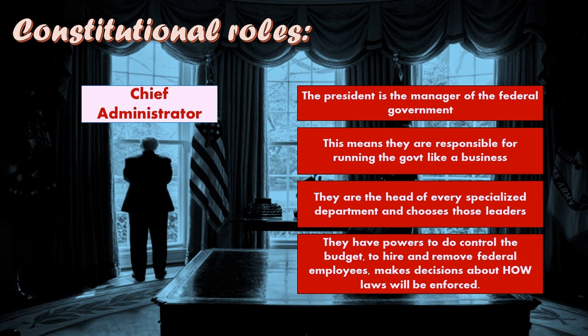The president also makes decisions about how laws will be enforced. For example, President Obama chose to prioritize enforcement of more dangerous drugs like heroin and methamphetamine and deprioritize marijuana enforcement. President Trump, as administrator, made the opposite choice and prioritized marijuana enforcement. So the president does get to make choices in how those laws are carried out — a very important role.